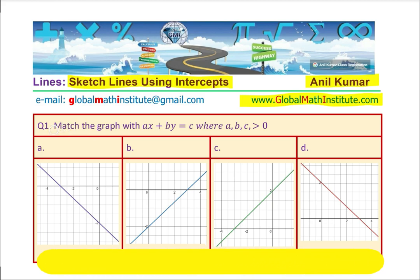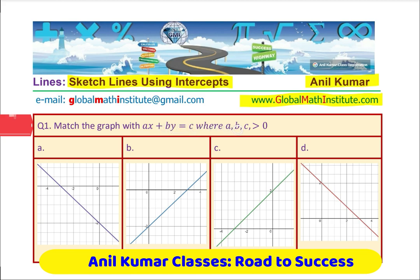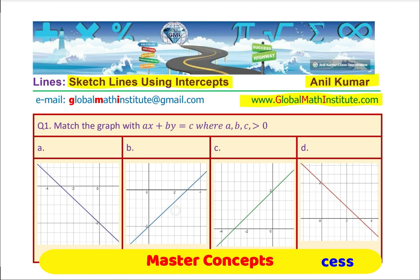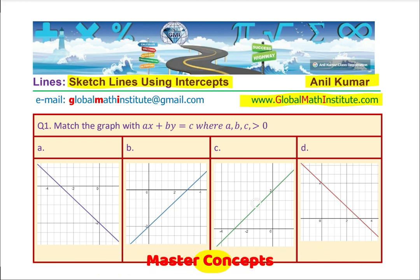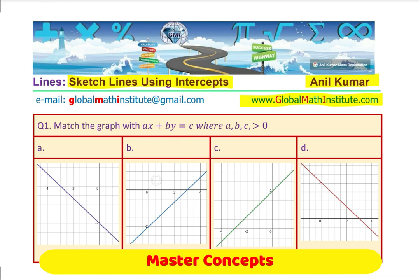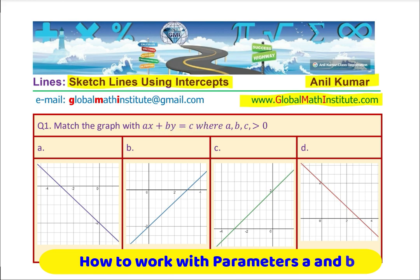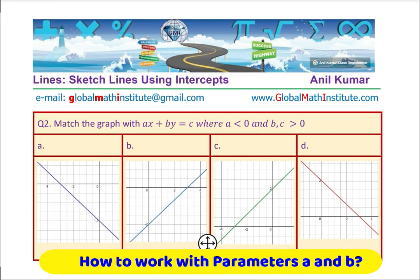Question number one: match the graph with ax plus by equals c, where a, b, and c are all greater than zero. The graph options show lines with different x and y intercepts — one line crosses diagonally through quadrant three, one passes through quadrant four, one through quadrant two, and one through quadrant one. Which one is the right match for ax plus by equals c where all values are positive?